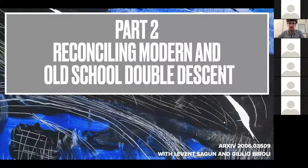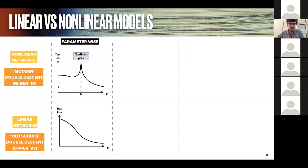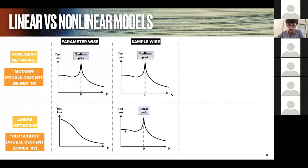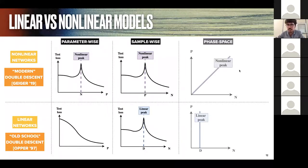In the second part of this talk, I'd like to reconcile double descent with an older version of double descent, known since the nineties in statistical physics in the perceptron. If we look at the parameter-wise profile — test error versus number of parameters — as seen in neural networks, you get a peak when P equals N. For linear networks, you won't get such a peak. However, you will get a peak in the sample-wise profile — test error versus number of training examples — when N equals the input dimension D rather than P. Plotting this in a P-N phase space, these two kinds of overfitting correspond to different lines.